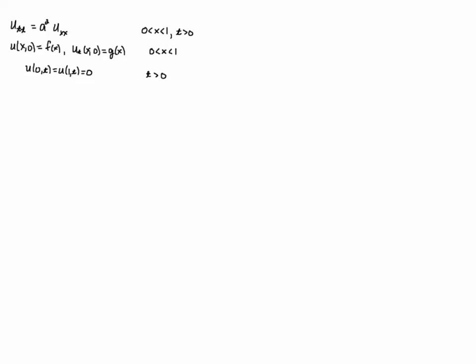Alright, so let's go through separation of variables. So we start with the standard procedure. We let u be a separable equation here. It's a function of x multiplied by a function of t. And then we plug it into the PDE and we get X double dot equals a squared X double prime T.